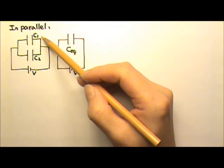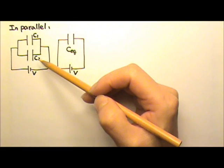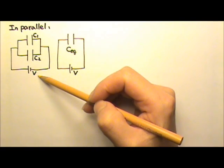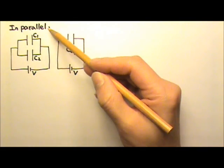Here we have two capacitors, C1 and C2, connected to a battery with voltage V. We say that these two capacitors are connected in parallel.